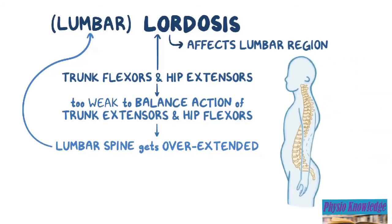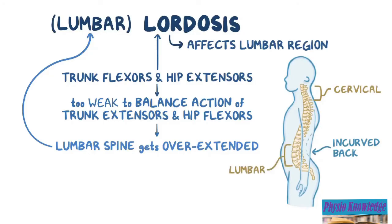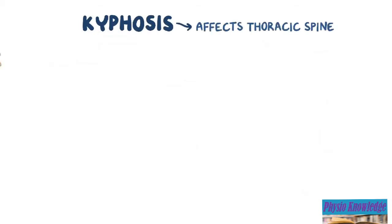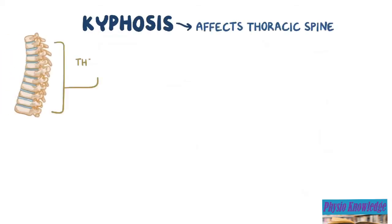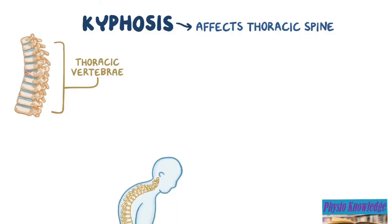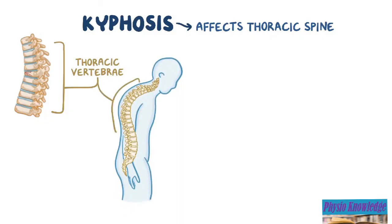Lordosis results in an incurved back in the cervical or lumbar spine. Lordosis mainly affects the thoracic spine. It usually occurs when the front of the thoracic vertebrae gets deformed or crushed, causing this part of the spine to excessively bend forward. Lordosis typically results in a rounded back in the thoracic spine, which looks like a hump in the upper back.